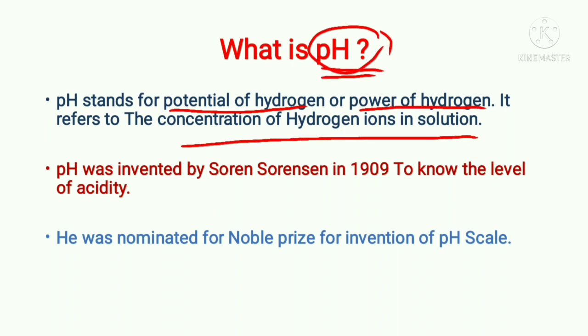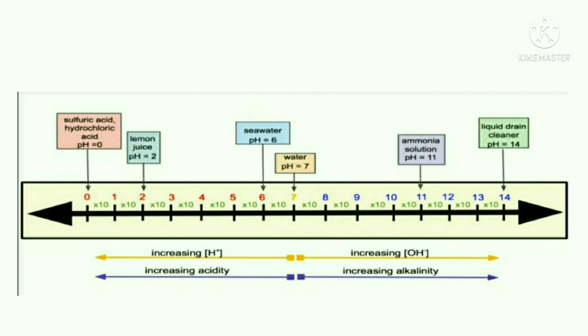This pH was invented by scientist Soren Sorenson in 1909 to know the level of acidity. For this work he was awarded a Nobel Prize.